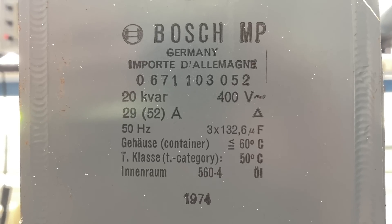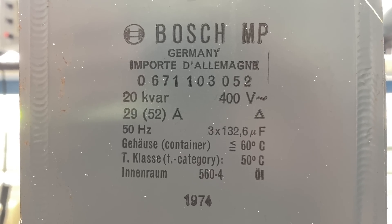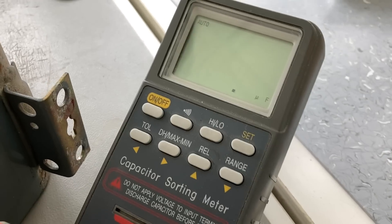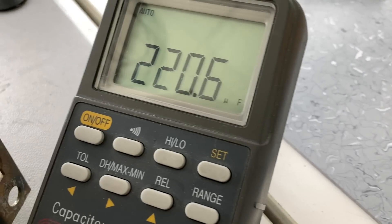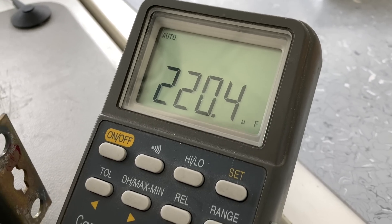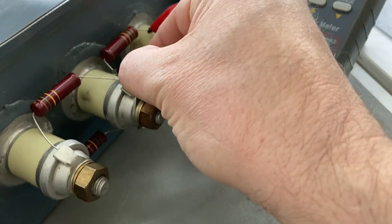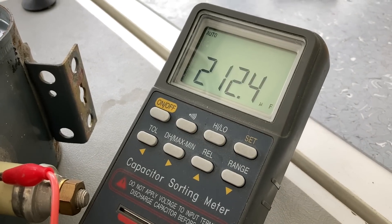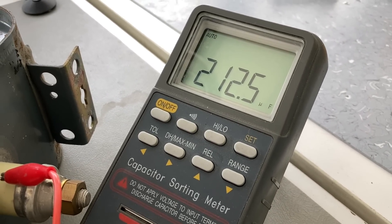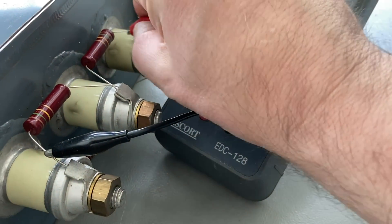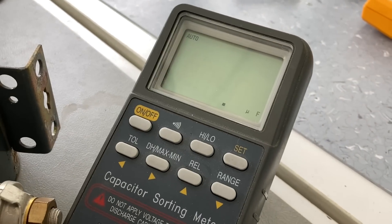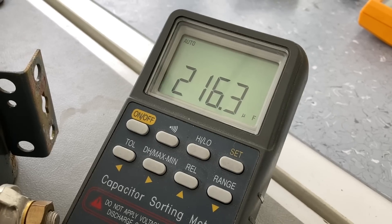That's one of the capacitors. It's, as I said before, 3 times 132 microfarad for 400 volts mains voltage. If we measure them, we get 220 microfarads. I measure that between all the three connectors there. We always get 212, 220, something around that. Why is that? The capacitor said it's 132. Why do we have more?